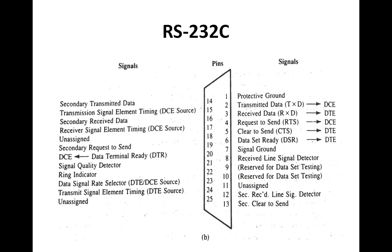Pins 12, 13, 14, 16, and 19 are data and handshake signal lines for the backward channel. Some modems allow communication over a secondary or backward channel, which operates in the reverse direction from the forward channel at a much lower data rate. Pins 15, 17, 21, and 24 are used for synchronous data communication.